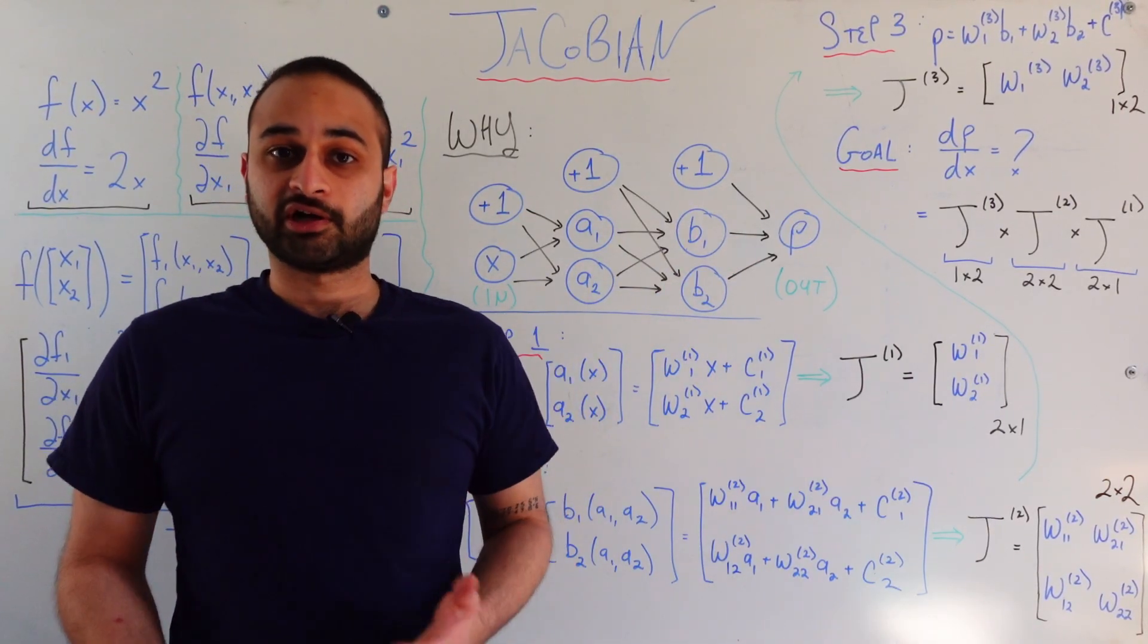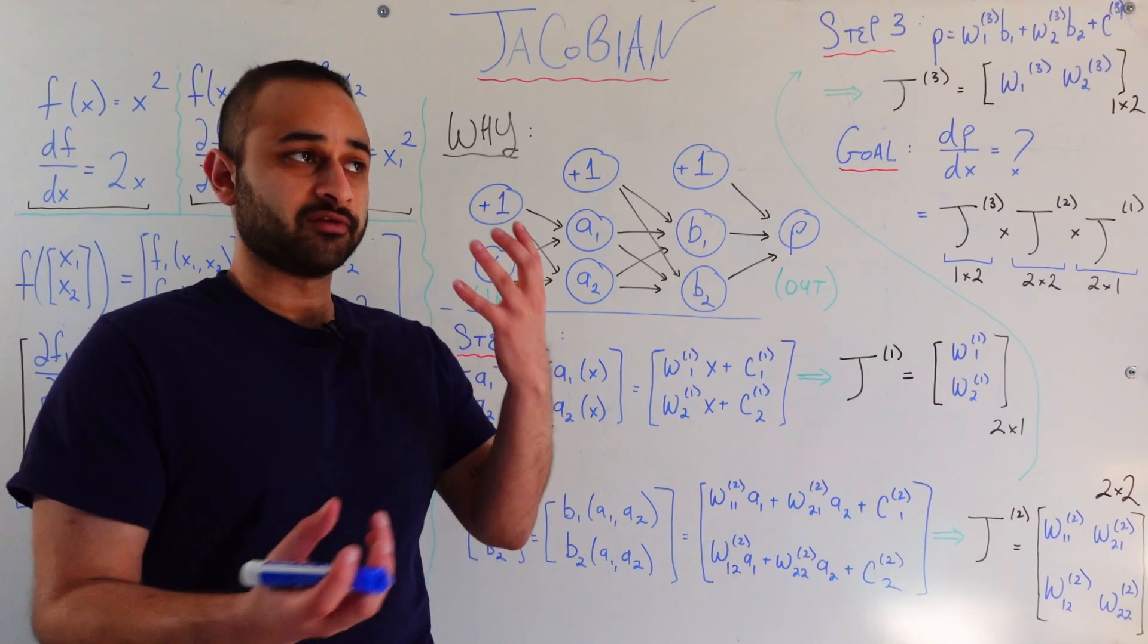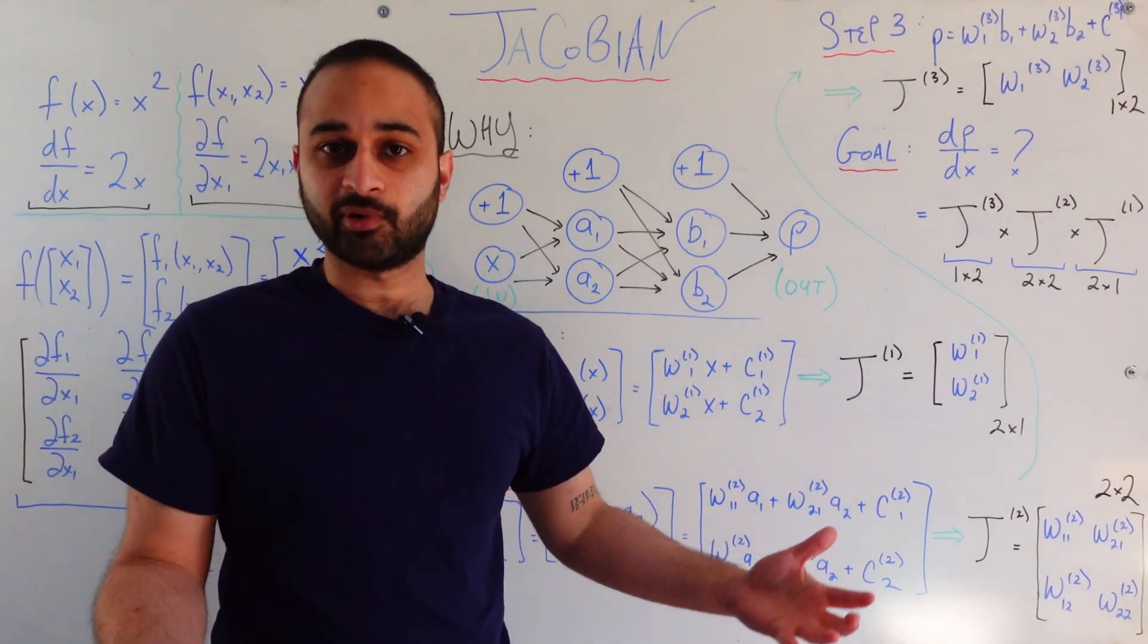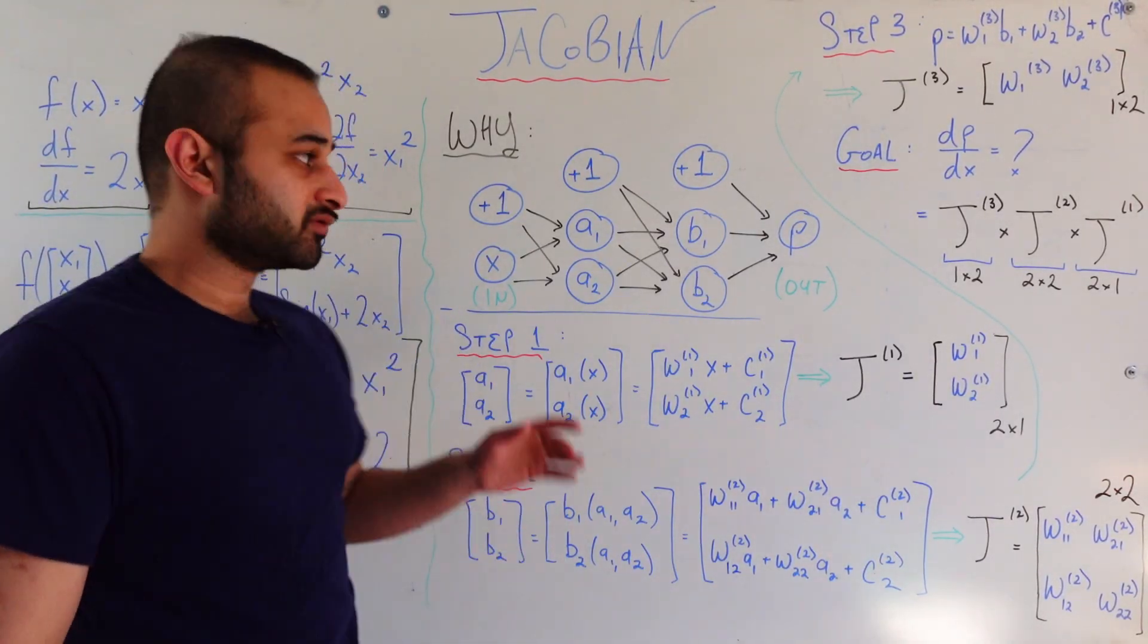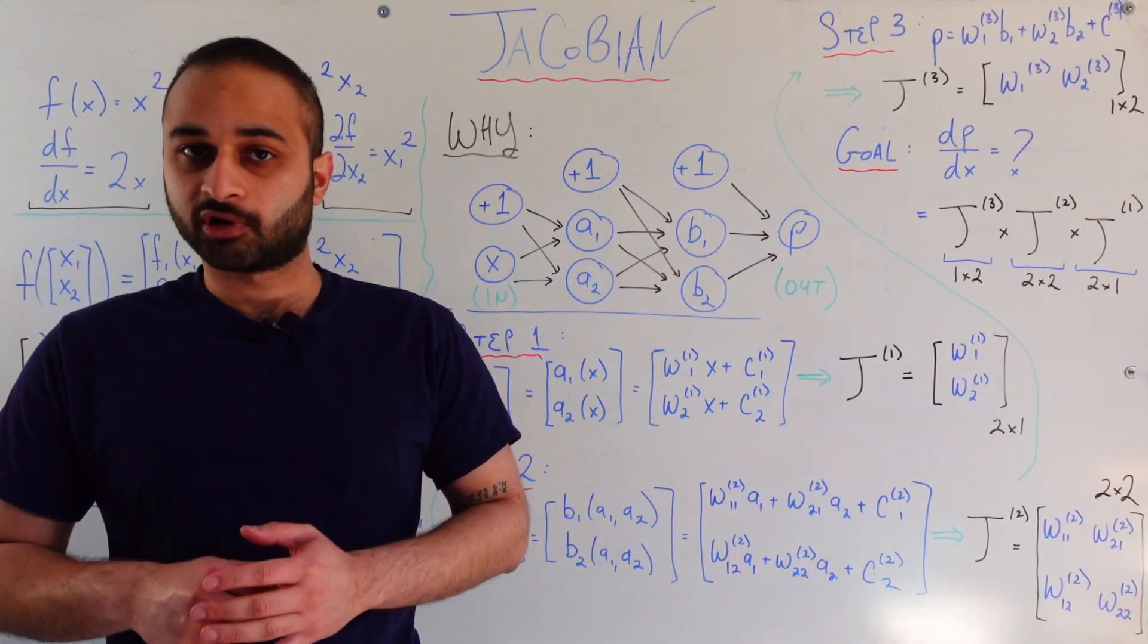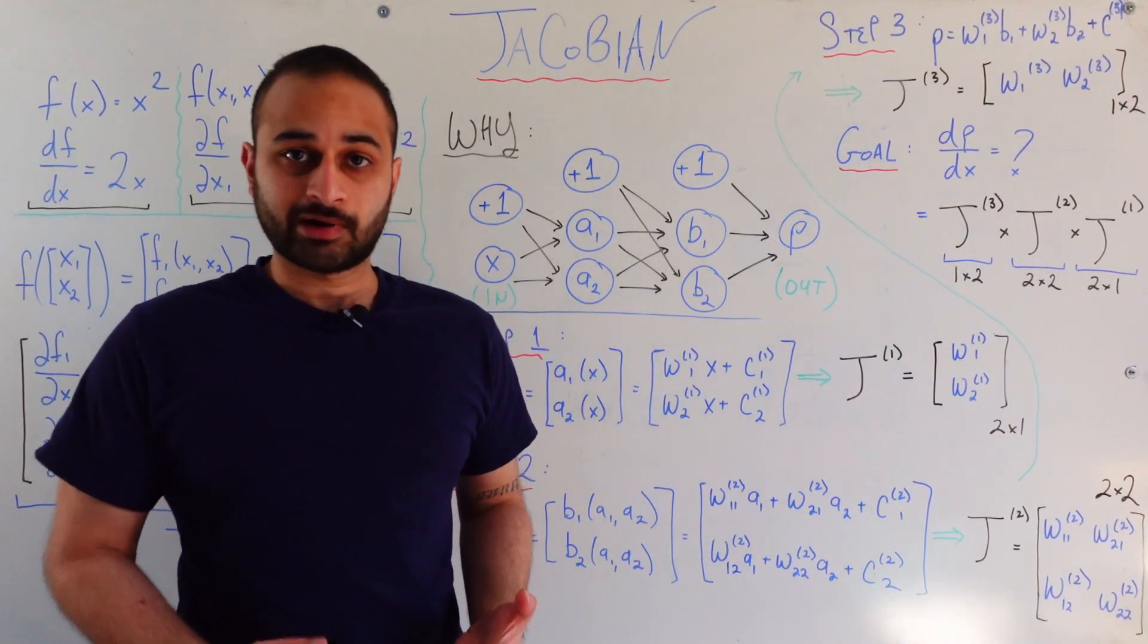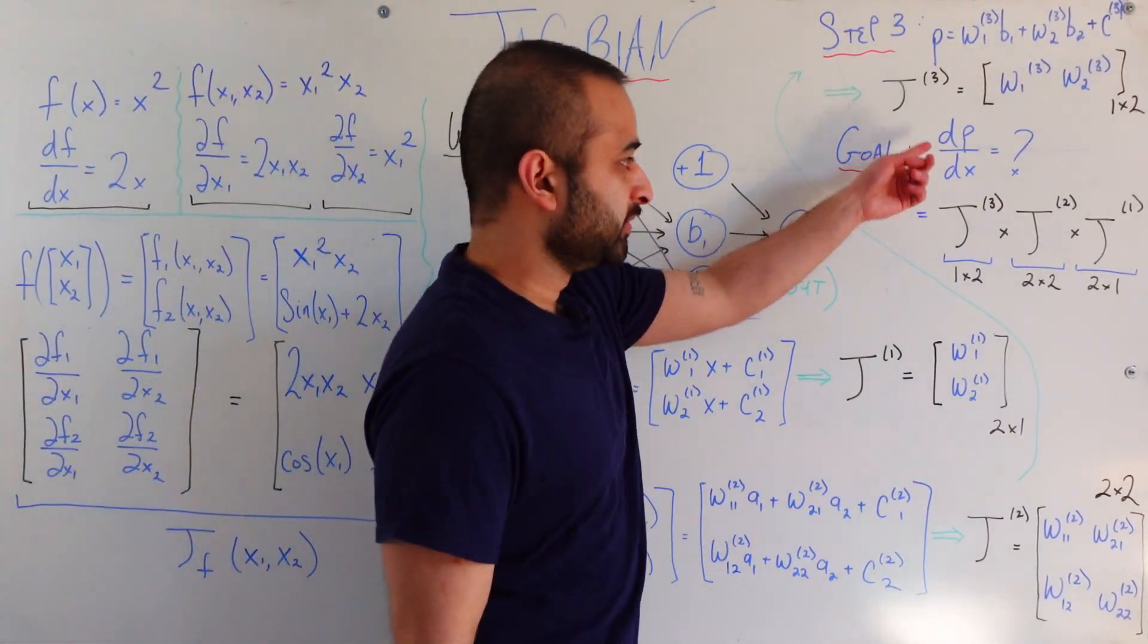So I call it p because a lot of times you'll be using a neural network to try and figure out probabilities of some event happening, that's just one application. So we have some input x which is one number and we have some output p which is another number. So our goal and everything we're about to talk about is going to be try to figure out what is dp dx. In other words,